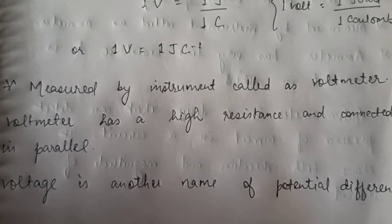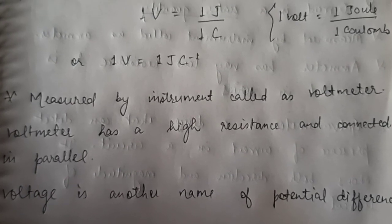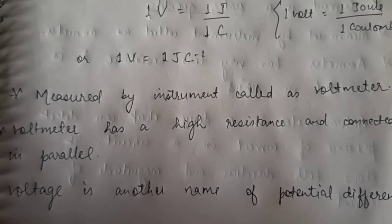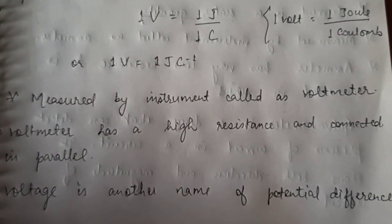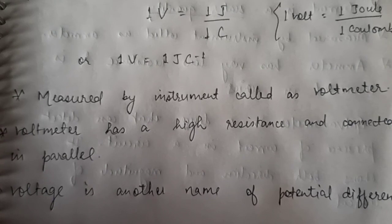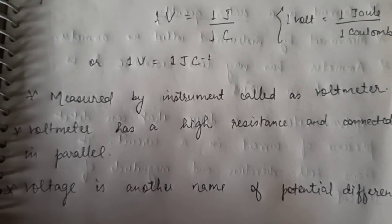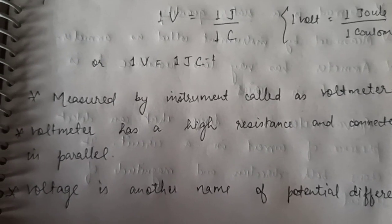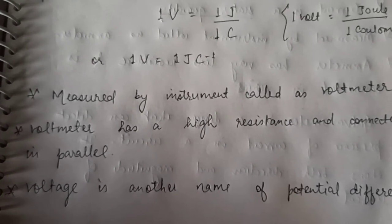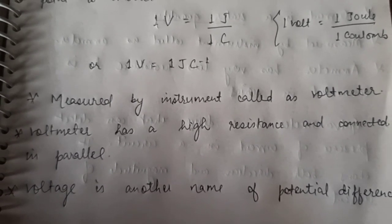The instrument used to measure voltage is the voltmeter, which has very high resistance and is connected in parallel. Now, resistance means to resist — some kind of hindrance. When electric current passes, there is some hindrance offered in its path, which is called resistance. We will study resistance in detail once we study Ohm's law.